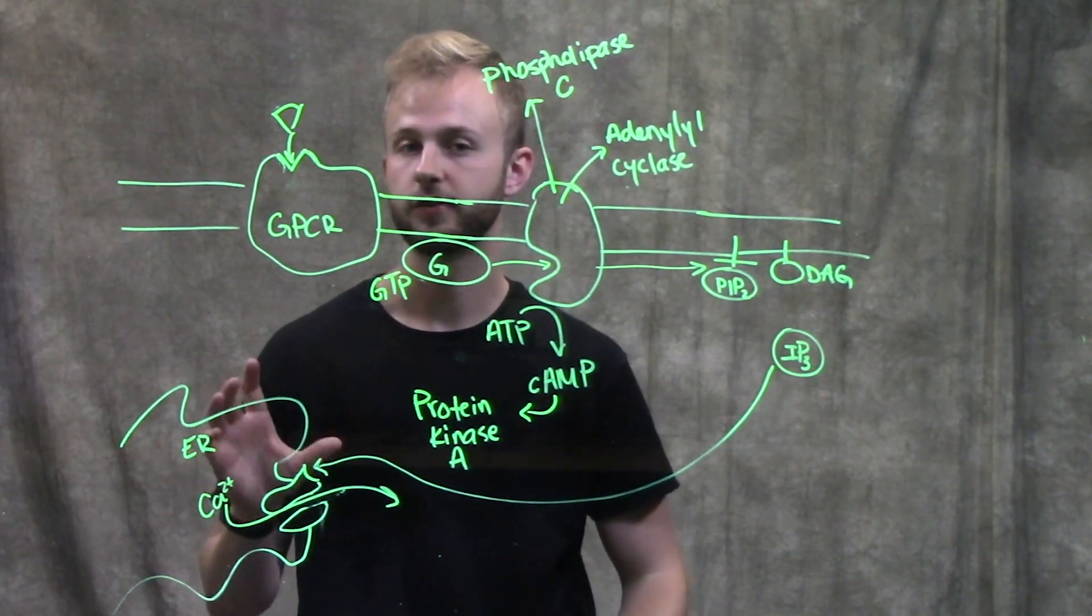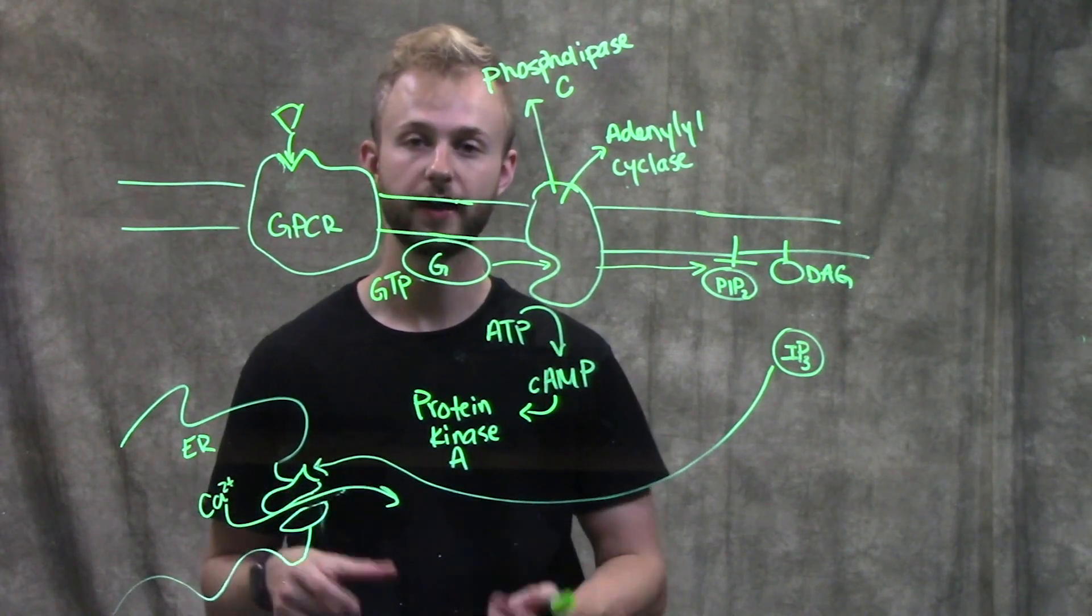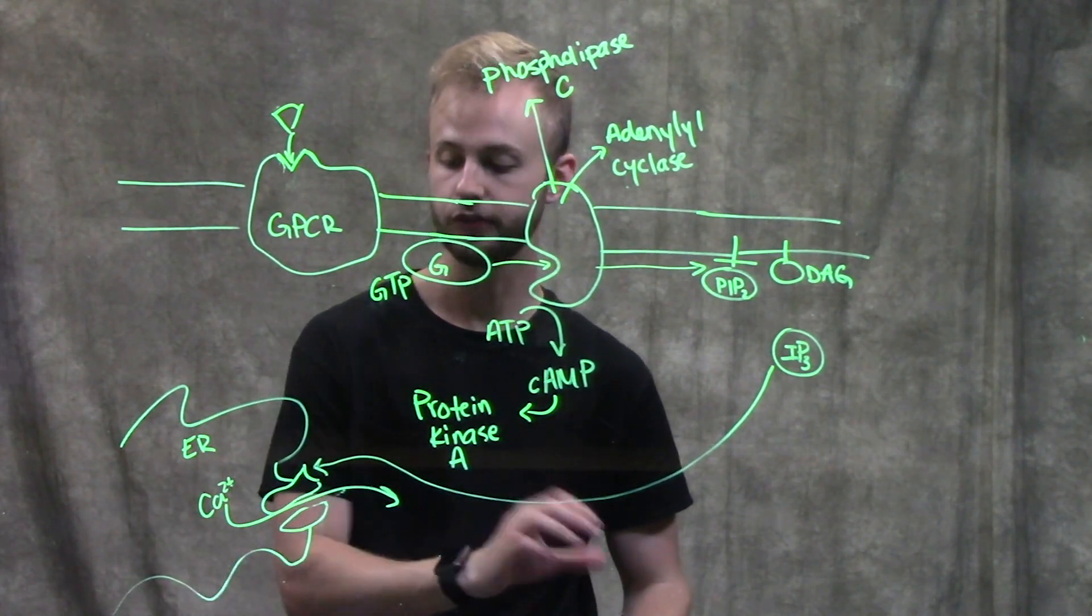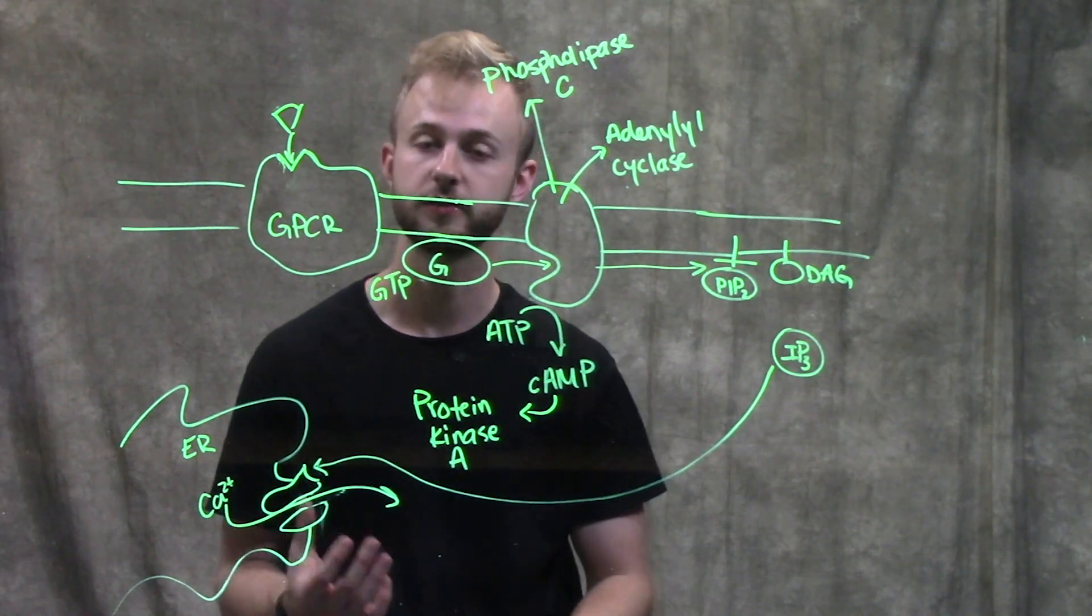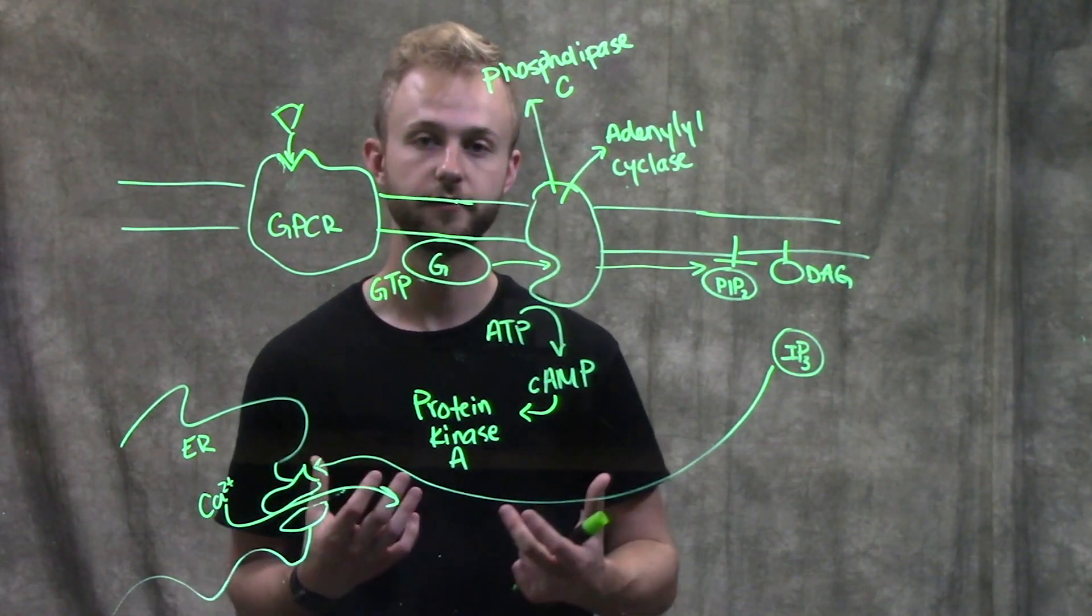Calcium can flow out of the lumen of the ER and into the cytoplasm. The endoplasmic reticulum is a really important place that we store calcium in our cells. And so when we get this huge release of calcium out of our endoplasmic reticulum, it can cause a lot of different things.